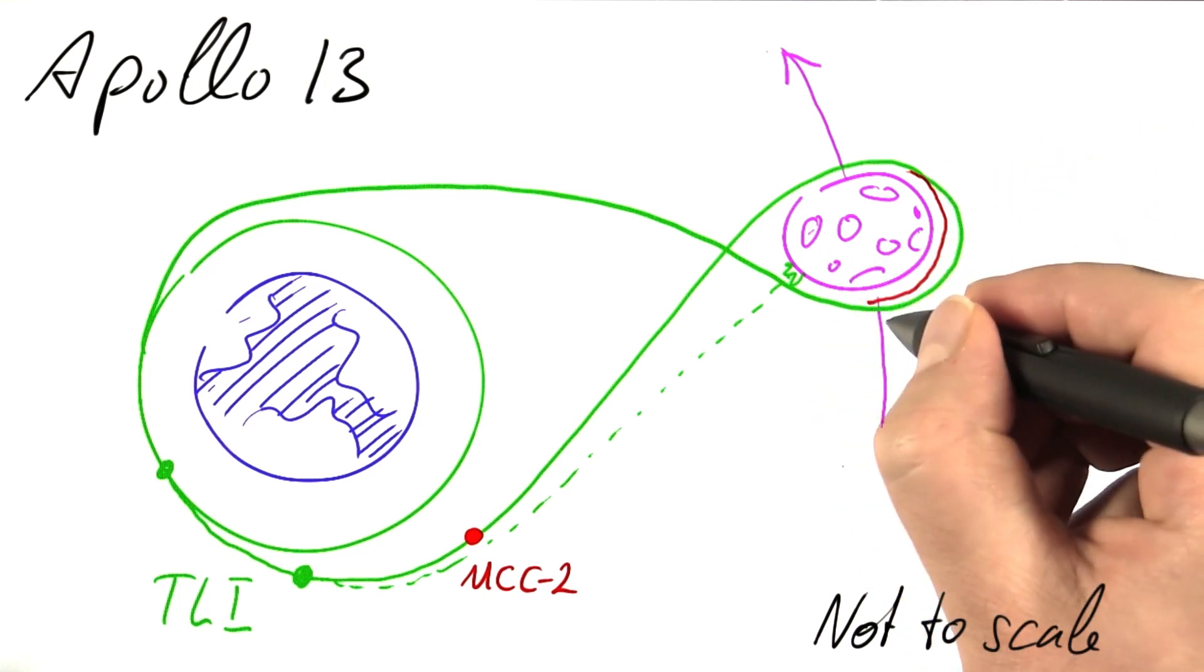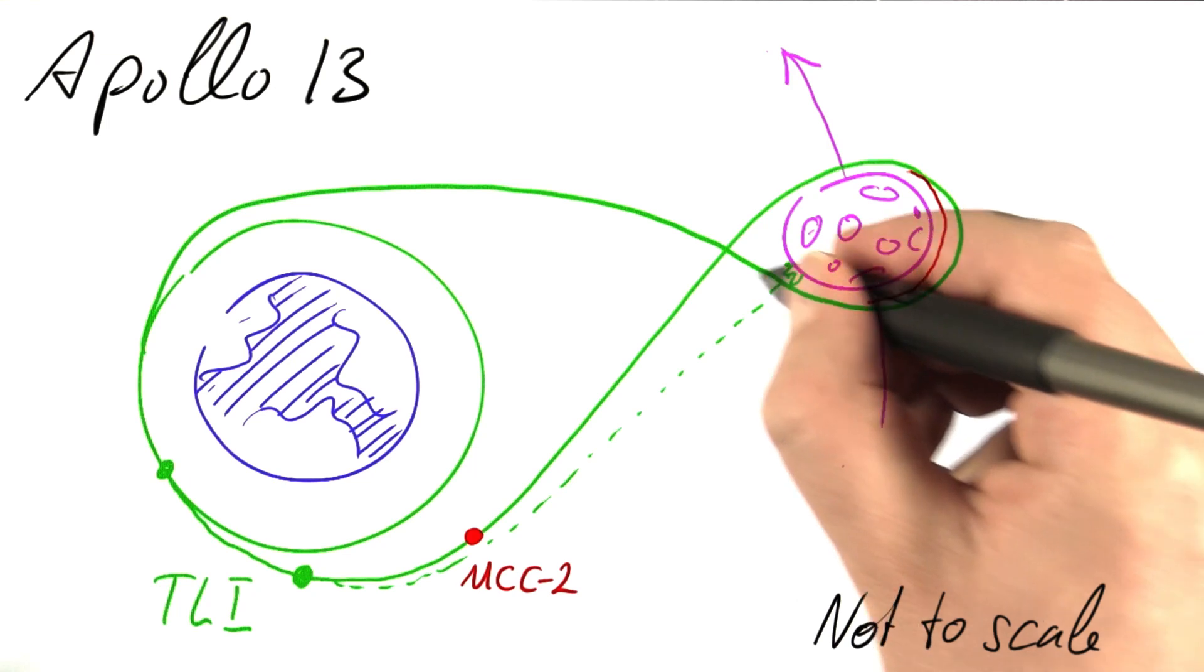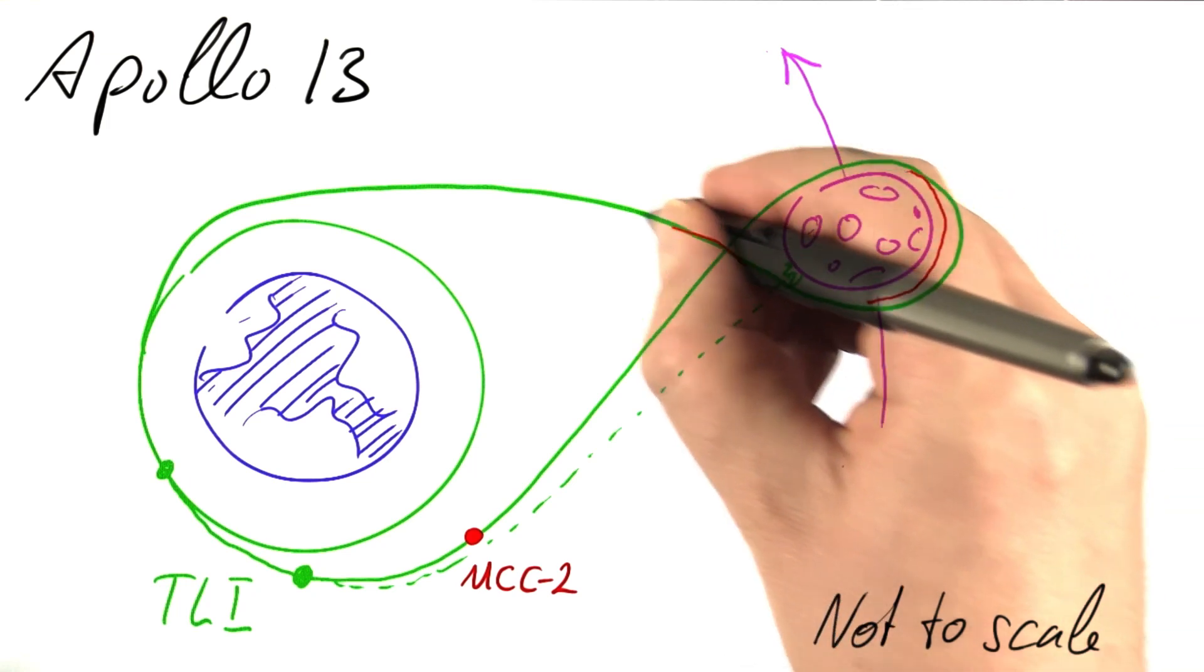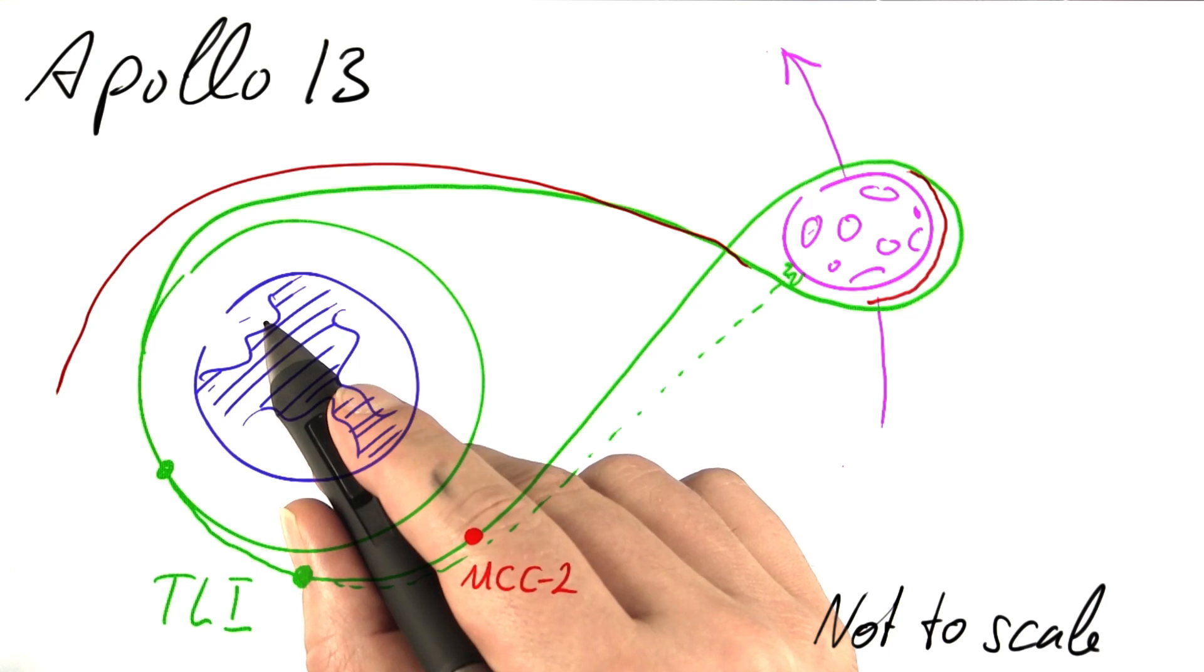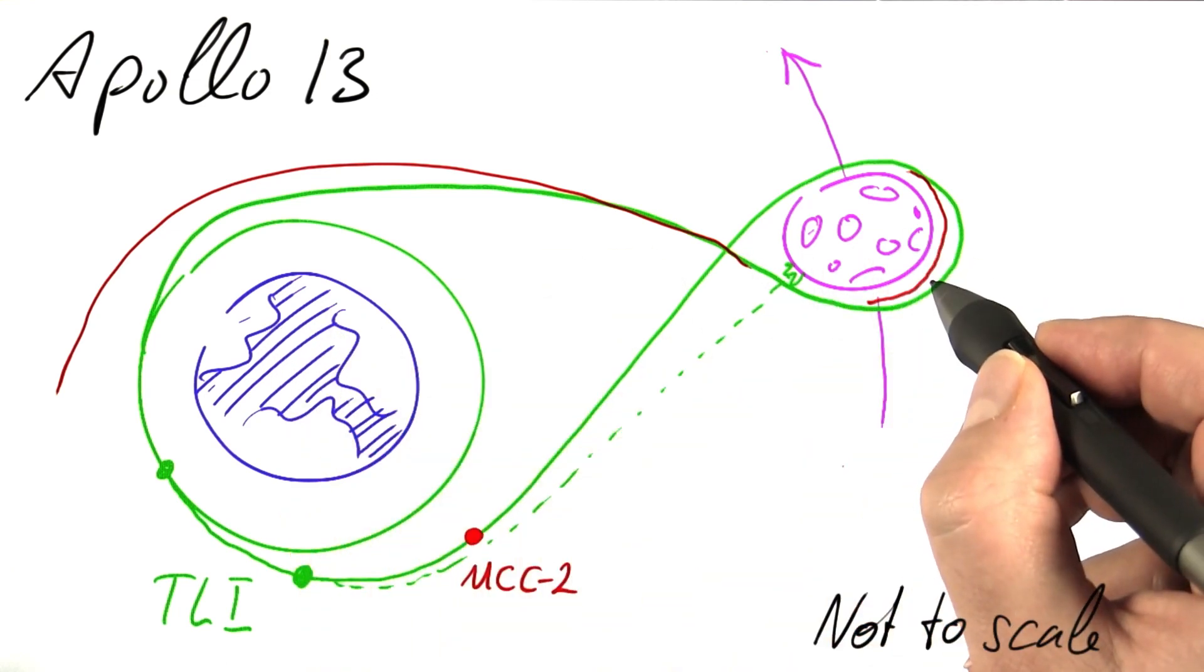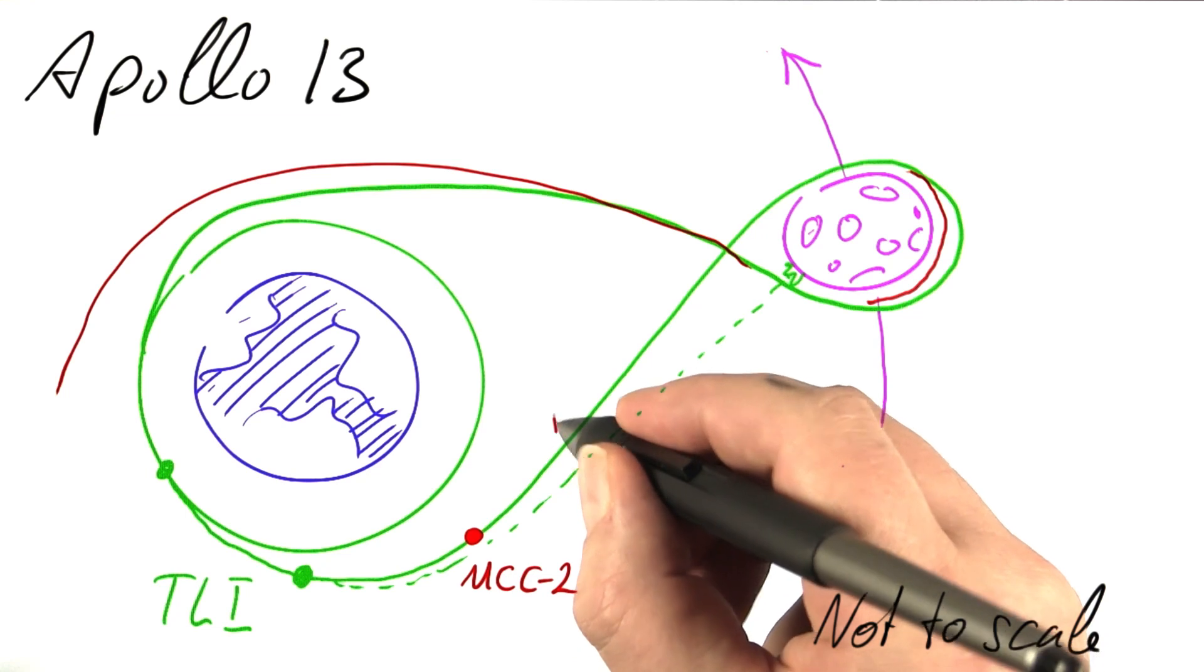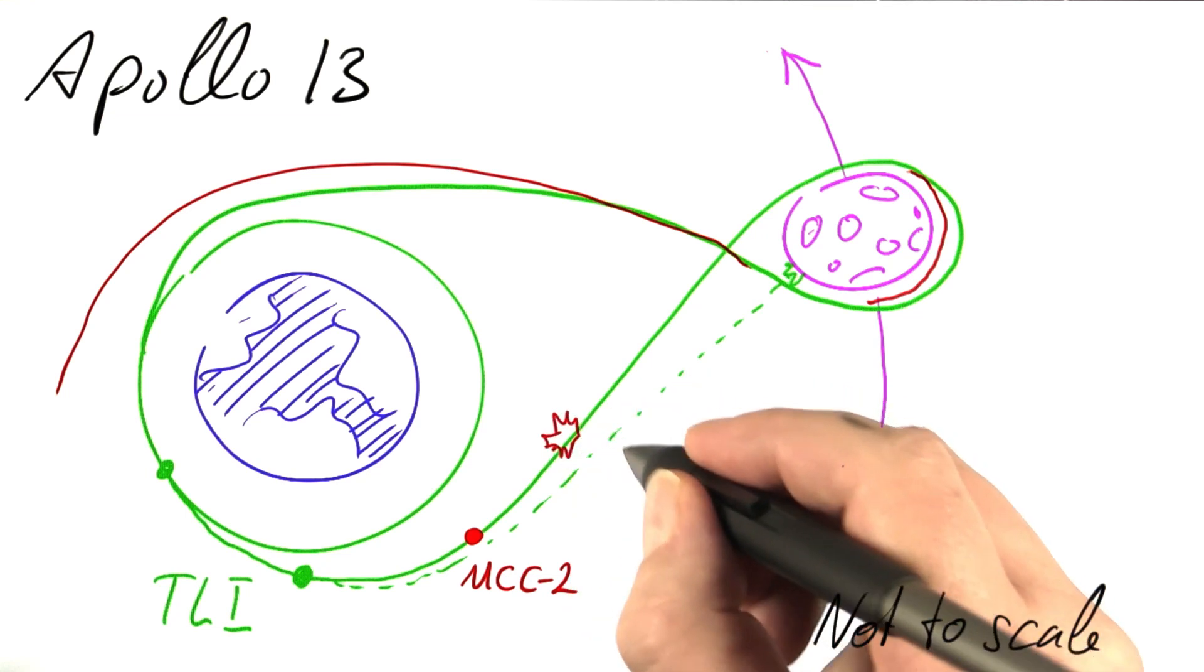This trajectory no longer was a free return trajectory, but eventually did not return to Earth. So that's an unsafe trajectory, which everybody learned some hours after that,